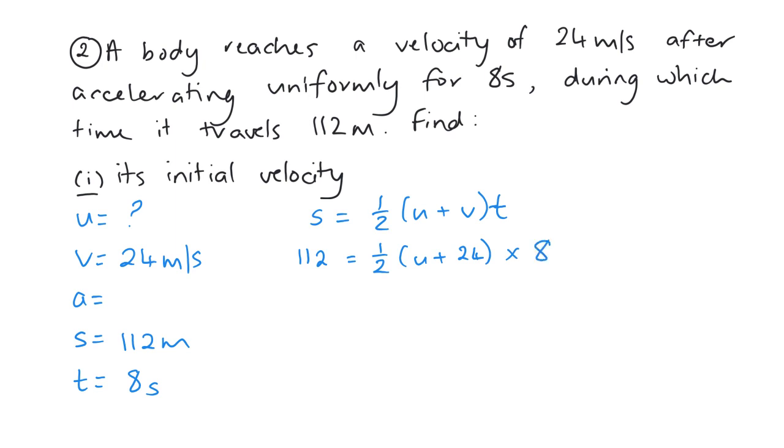So I'm going to say a half times 8 is 4. So then I'm going to divide by 4. Get just U plus 24 on this side. So 112 divided by 4 gives us 28. So bring the plus 24 across, and it'll be 28 minus 24 is U. So U is 4 meters per second.